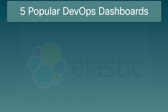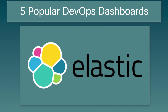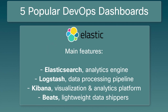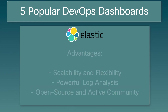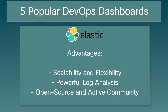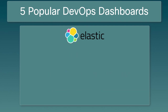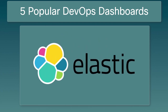Elastic Stack, traditionally known as the ELK Stack, is a popular open-source log management and analytics platform consisting of four main components: Elasticsearch, Logstash, Kibana, and Beats. Advantages include scalability and flexibility, powerful log analysis, and an open-source active community. Disadvantages include complexity and learning curve, being resource-intensive, and ongoing maintenance and monitoring requirements. Organizations should be prepared for the initial complexity and resource requirements associated with deploying and managing Elastic Stack.